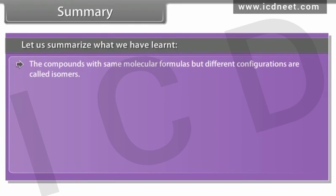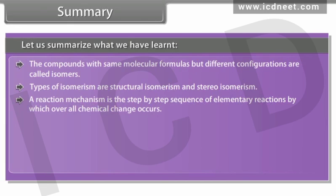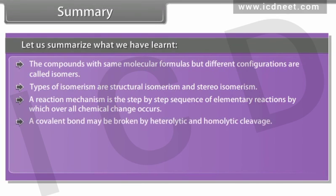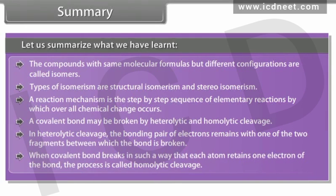Summary: the compounds with the same molecular formulas but different configurations are called isomers. Types of isomerism are structural isomerism and stereoisomerism. A reaction mechanism is the step-by-step sequence of elementary reactions by which overall chemical change occurs. A covalent bond may be broken by heterolytic and homolytic cleavage. In heterolytic cleavage, the bonding pair of electrons remains with one of the two fragments. In homolytic cleavage, each atom retains one electron of the bond.